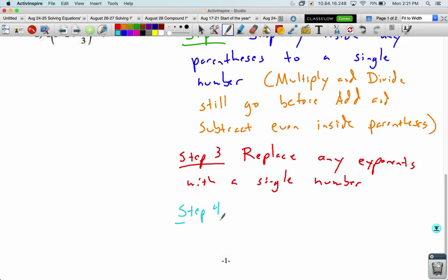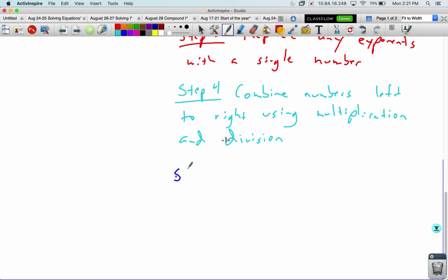So, step four is to combine numbers left to right using multiplication and division. And step five, we'll just say complete all addition and subtraction left to right.